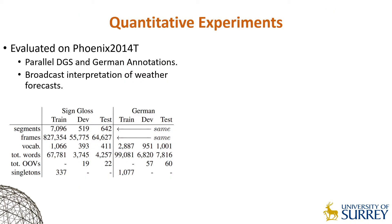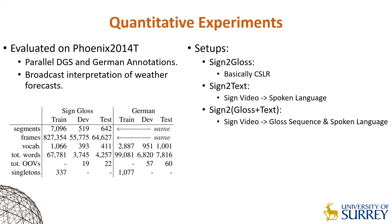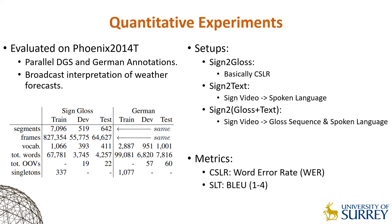We evaluate our approach on the Phoenix 2014T corpus, which contains broadcast interpretations of weather forecasts from non-native signers. We consider three setups: sign-to-gloss, sign-to-text, and sign-to-gloss-to-text. Sign-to-gloss is essentially continuous sign language recognition. Sign-to-text is the direct translation to spoken language. And sign-to-gloss-to-text is a combination where the models were jointly trained for recognition and translation. We utilize two metrics in our evaluations: word error rate for recognition and BLEU scores for translation.